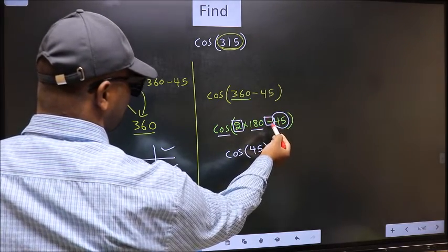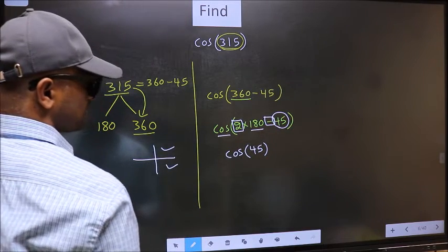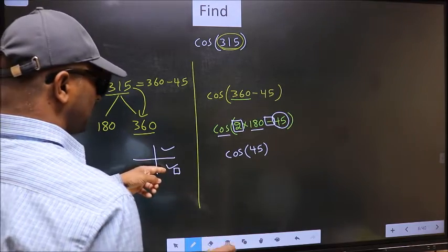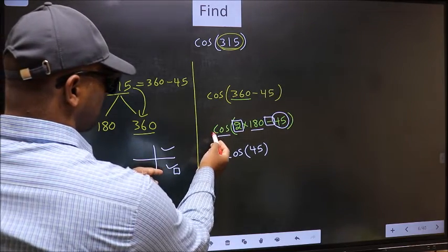Here we have negative. That means the angle lies in the fourth quadrant. And in the fourth quadrant, cos is positive.